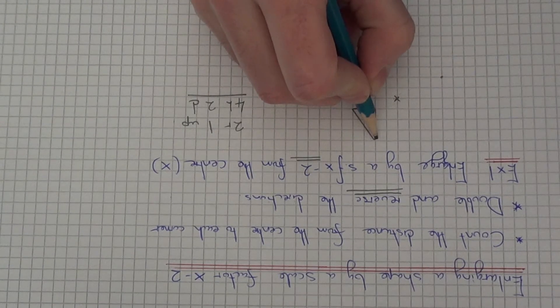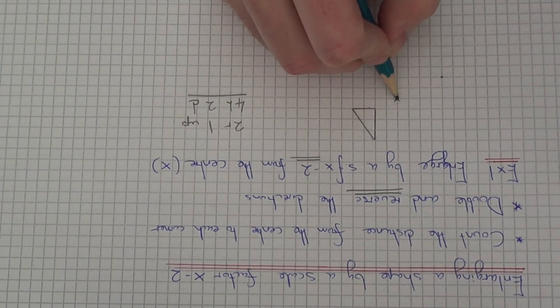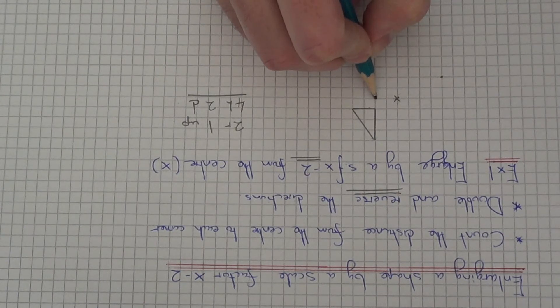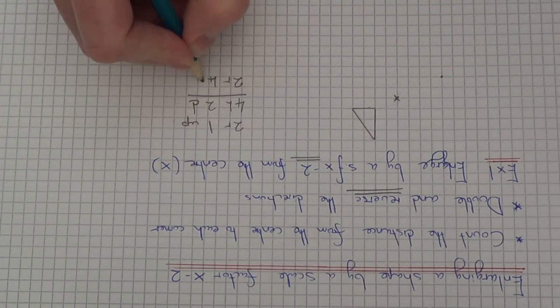So let's do the next corner, so let's do the top corner this time. So count the distance from the centre to the top corner. So it's 2 right and 4 up. So make a note of that.